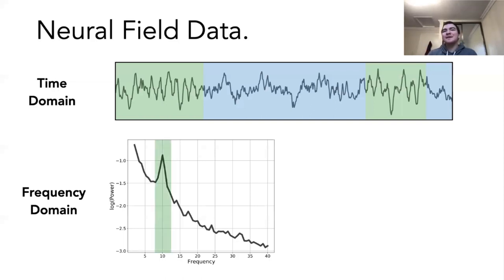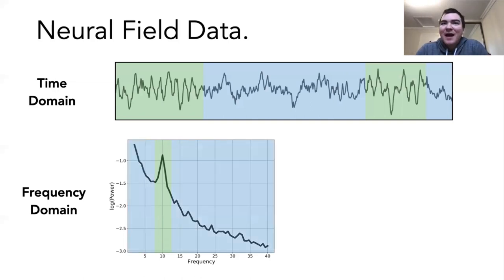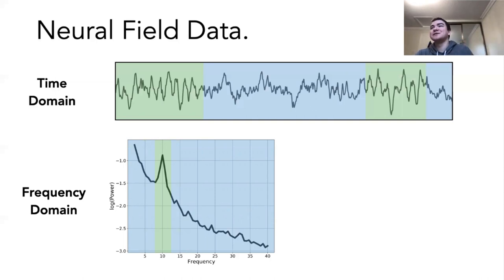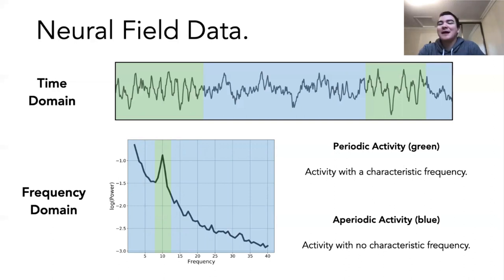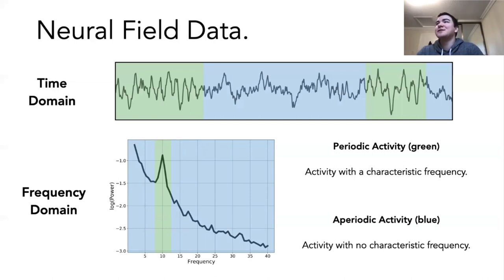This gives us an operational definition: periodic activity or neural oscillations means activity with a characteristic frequency — a peak of power at a specific frequency range. Aperiodic activity means activity with no characteristic frequency — power across all frequencies with no specific peak. Descriptively, it's just colored noise, where there's a pattern of power across frequencies but no particular frequency is singled out. White noise is the limiting case; neural data typically shows colored noise with more power at lower frequencies.